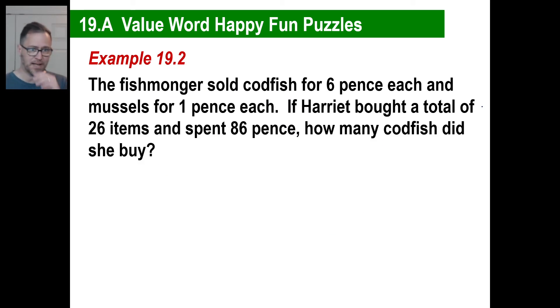Let's try another one. The fishmonger. Your parents might have warned you about people like these who go around monging all the time. The fishmonger sold codfish for six each and mussels for one each. Harriet bought a total of 26, spent 86.